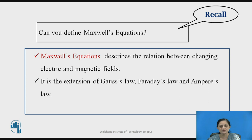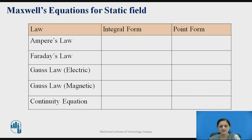We can define different Maxwell's equations for static as well as time-varying fields by using Gauss's law, Faraday's law, Ampere's law, continuity equation, etc. Now let us recall all Maxwell's equations for static fields. A static field is nothing but a field which does not vary with time. These are the different laws defined in the first column, and for each we can define Maxwell's equation in integral form and derivative form, also known as point form.